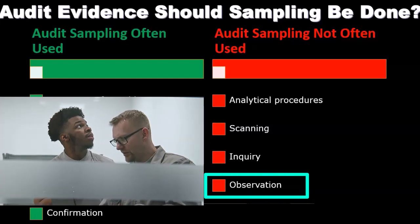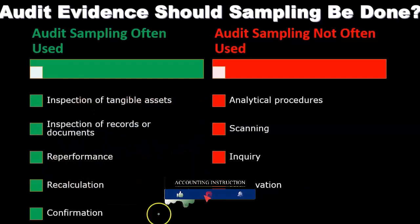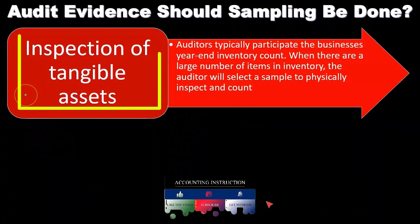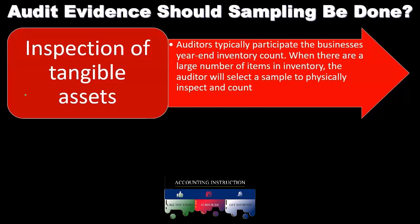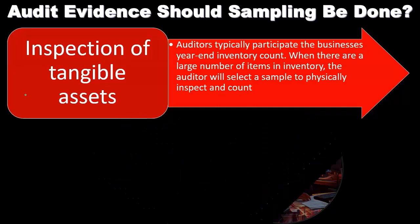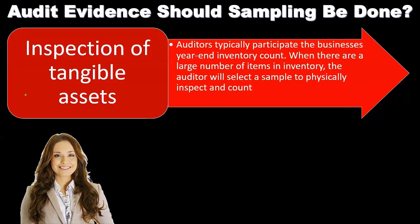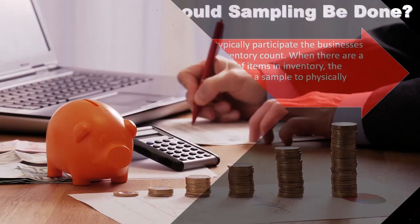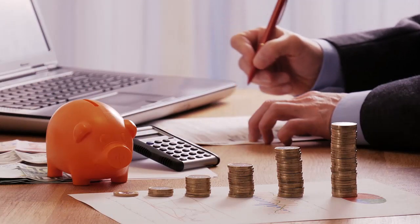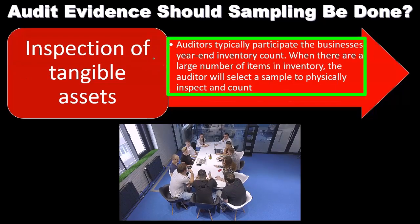Observation — we may not do as much in terms of sampling for observation either, as we might go out and observe what is happening at that point in time. So let's take a look at a process. For example, the inspection of tangible assets: if we're going to go out and inspect tangible assets — physical items you can touch — we're going to test them, possibly testing for existence. Are they actually there? They're on the financial statements — are they actually out there? We'd get a list of these tangible assets representing numbers on the financial statement, randomly choose some sample of them, and then physically verify that they're actually there. Auditors typically participate in the business's year-end inventory count.